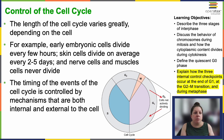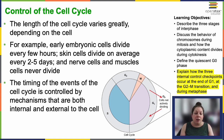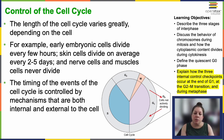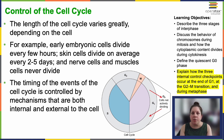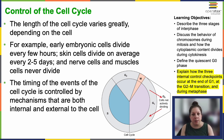Let's talk about control of the cell cycle. The duration varies significantly even among cells within the same organism. In humans, cell turnover rates range from just a few hours during early embryonic development to an average of two to five days for epithelial cells. Certain specialized cells like cortical neurons and cardiac muscle cells spend basically their entire lifespan in G0. The timing of cell cycle events is regulated by both internal and external mechanisms.